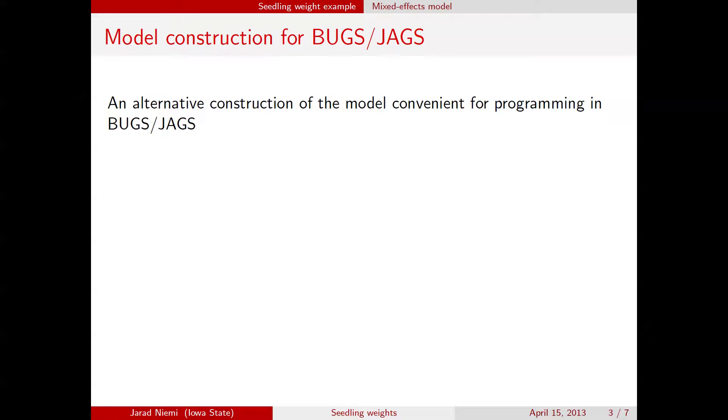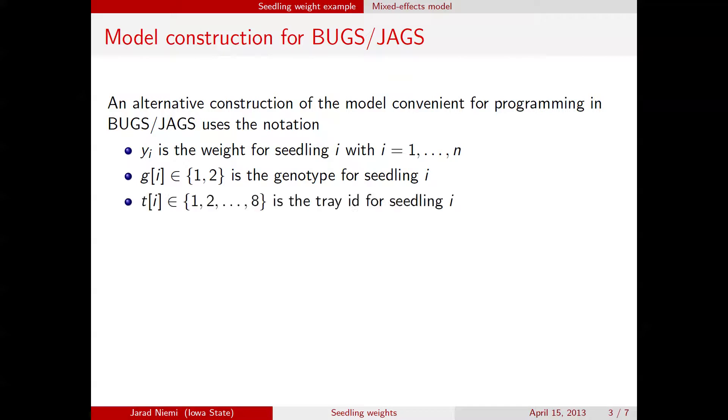We've commented previously about how to write this model in a notation that's convenient for use in JAGs, so I'm just going to be revisiting that and there's a slight change that I've made. Here we have yi is the weight for seedling i, gi is a function for seedling i that returns its genotype, and ti is a similar function that returns the tray id for seedling i. The model then is where the weight for seedling i is the mean weight for that genotype, plus a random effect due to the tray, and plus some extra white noise.